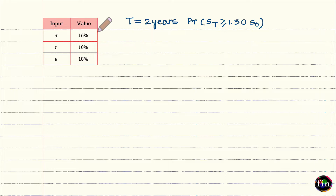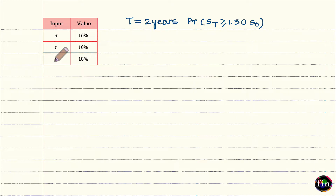Let me assume that there is a stock for which the standard deviation or volatility is 16 percent. The risk-free rate of interest, continuously compounded, is 10 percent per annum. The stock's expected rate of return, mu, is 18 percent per annum — again, mu is continuously compounded.